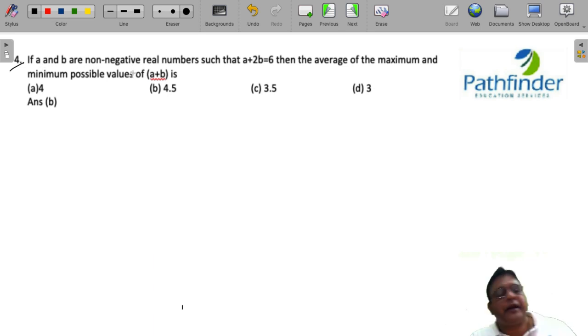If A and B are non-negative real numbers such that A plus 2B is 6, then the average of maximum and minimum possible values of A and B is.